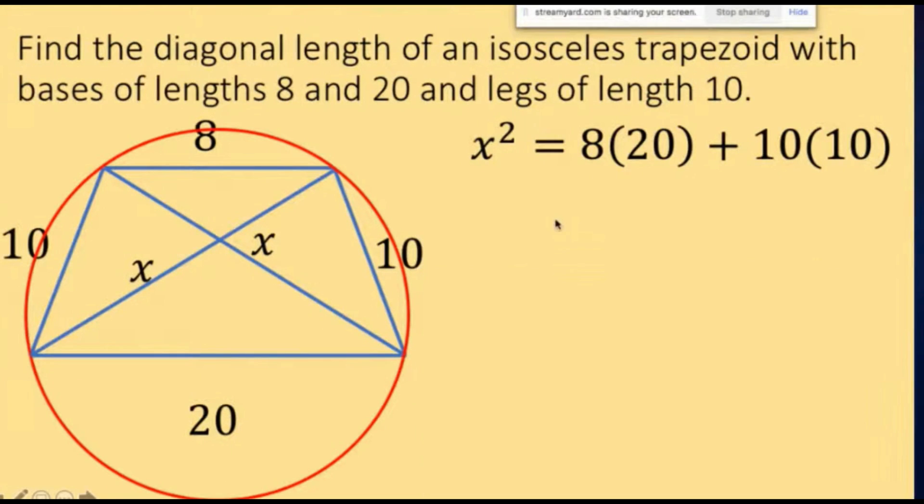And that gives us a value of x squared equals 260. Solving for x, we get square root of 260, and simplifying this we get x equals 2 square root of 65 as the length of the diagonal.